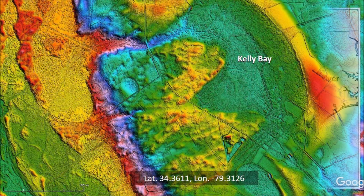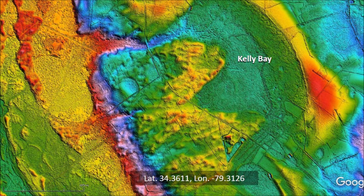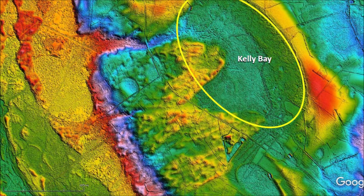We will use this LiDAR image for our analysis of Kelly Bay. We can fit an ellipse to Kelly Bay by matching the east margin of the bay. Mathematically, only five points are needed to fit an ellipse to an elliptical curve, so we can determine the shape of the bay even though Kelly Bay is partially obscured.